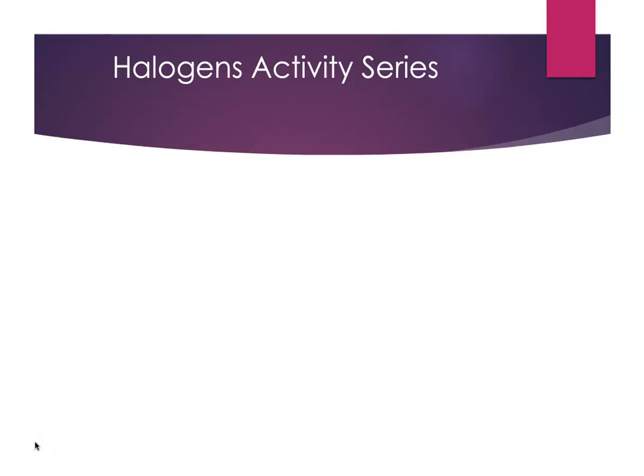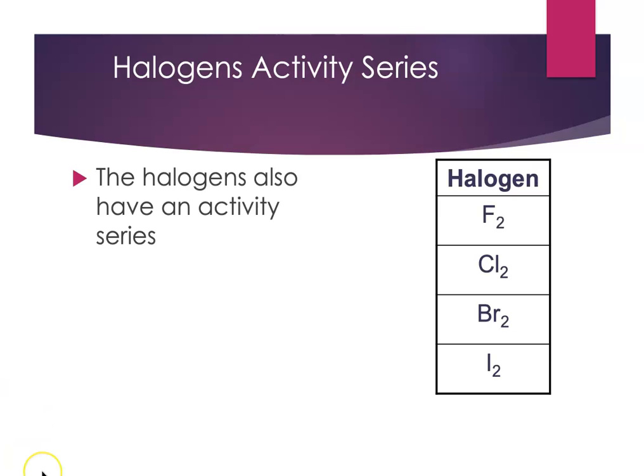So we had an activity series for the metals. It turns out there's an activity series for the halogens as well. It really works in the same way. The least reactive element in the series is iodine. It's at the bottom of the table and the most reactive element is fluorine and it's at the top of the table. And the same pattern works. You can replace a less reactive element, but not a more reactive element.